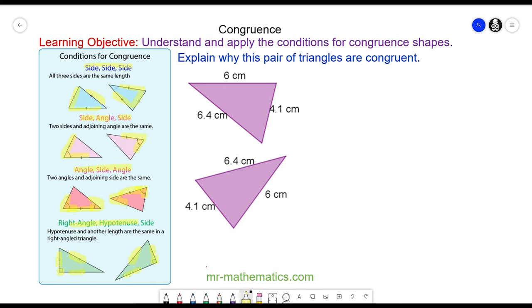So we're going to explain when this purple pair of triangles are congruent. You can see we have three sides that are equal: six centimeters on both, four point one centimeters on both, and six point four centimeters on both. So the proof is side, side, and side.